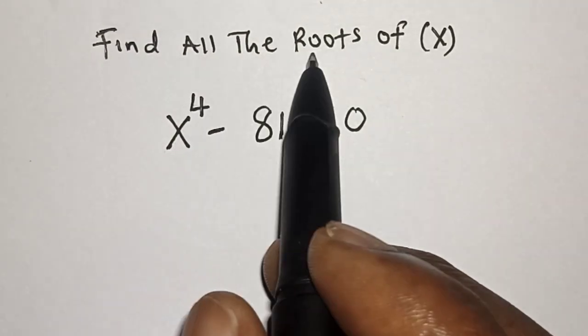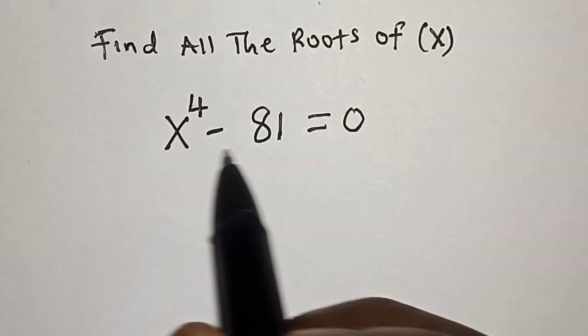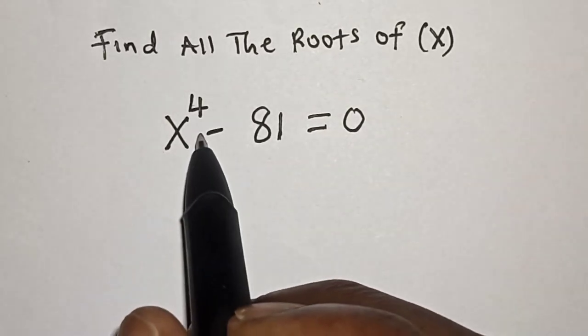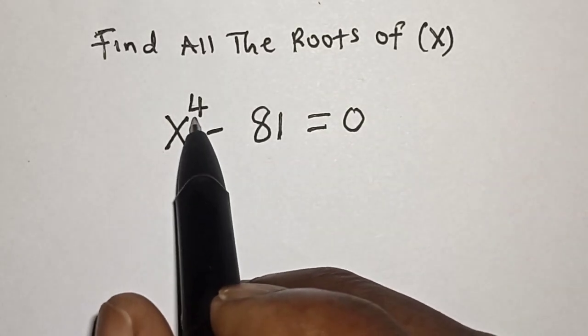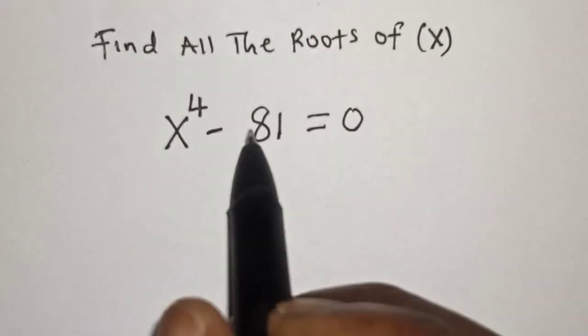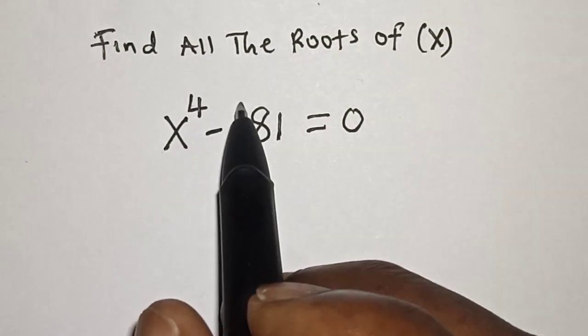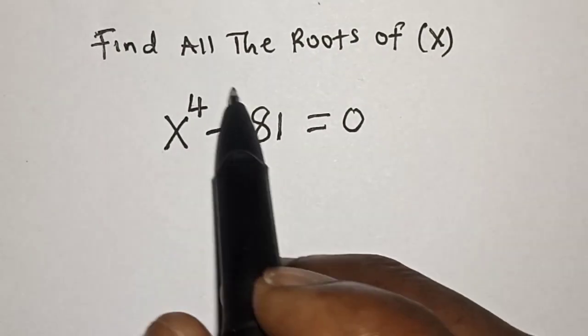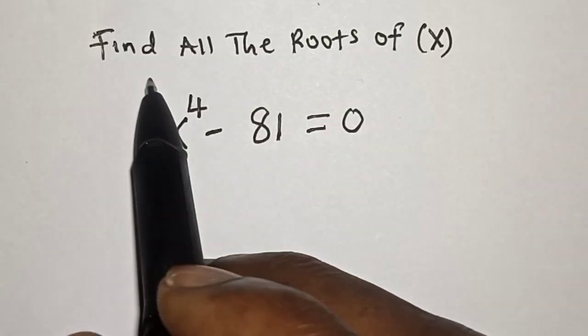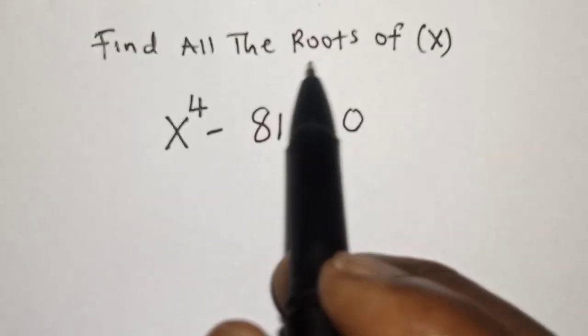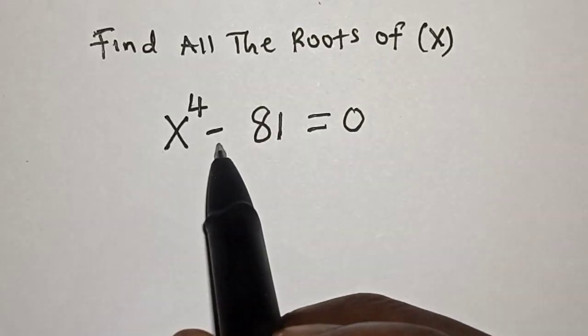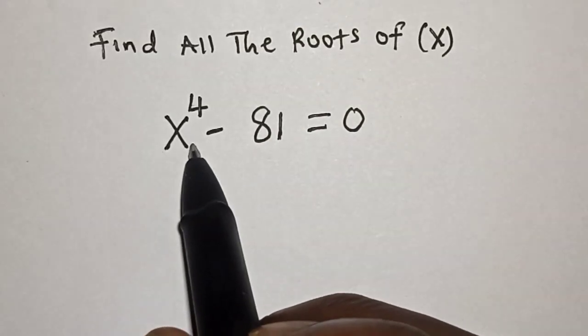Find all the roots of x, where x raised to power 4 minus 81 is equal to 0. Hello, welcome to Magist. In this class, we want to find all the roots of x from this given equation.